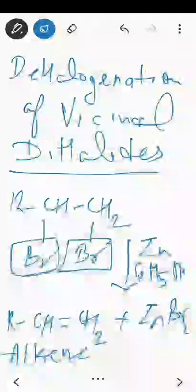All three of these methods — dehydration of alcohols, dehydrohalogenation of alkyl halides, and dehalogenation of vicinal dihalides — are examples of elimination reactions, which are a major route for the formation of alkenes. But there are also other methods, such as forming alkenes from alkynes by controlled hydrogenation.